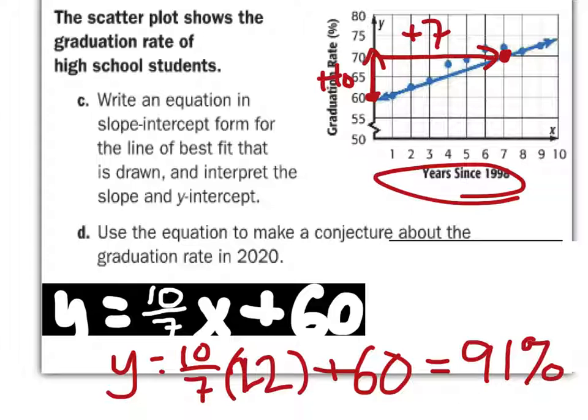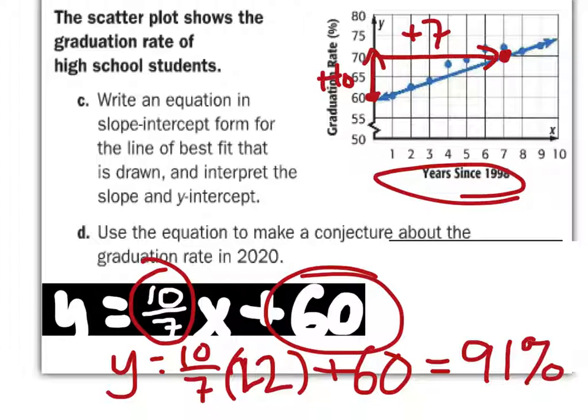Now, since this is an estimate, all this stuff is an estimate. Your answers are going to vary. But, I just need something close to, for example, 10 sevenths is the slope. And, the y-intercept being 60.